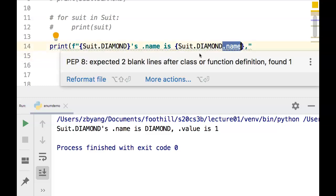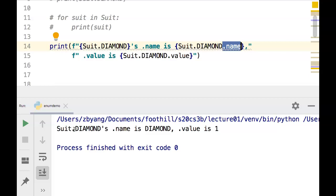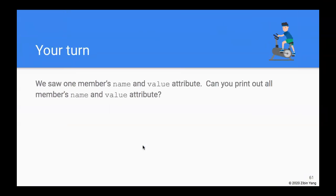And then the value in this case for diamond is 1, which is the integer value for the enum member. Now that I've showed you the basic usage of enum suit, I'd like you to try this on your own.